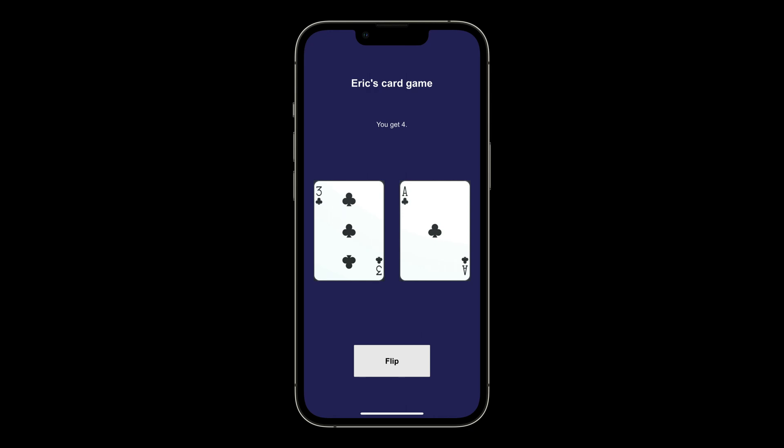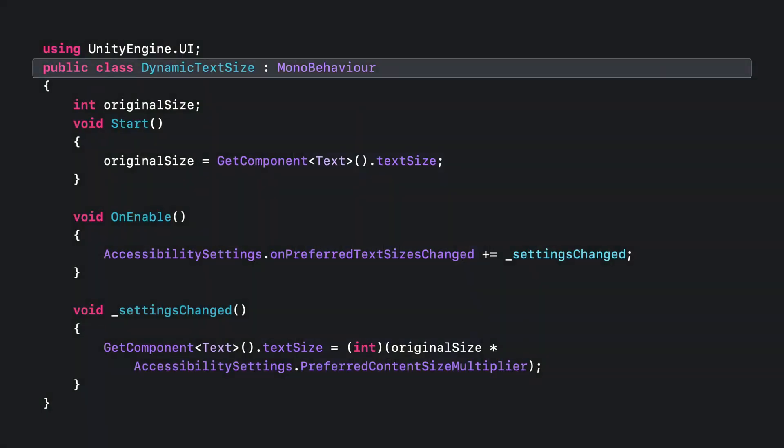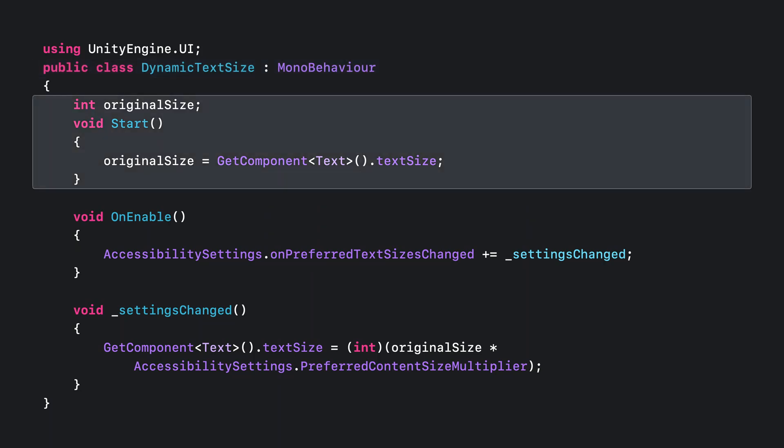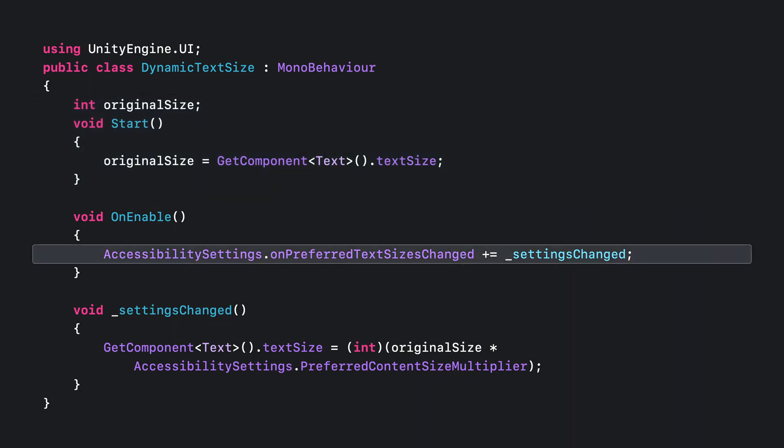Let's take a look at our game example to see how we can use dynamic type. Create a MonoBehaviour script called dynamicTextSize.cs. In the start function, first store the default text size into a variable. Then inside the onEnable function, subscribe to the settingChanged event using AccessibilitySettings.onPreferredTextSizesChanged.